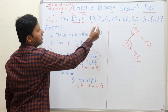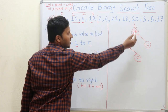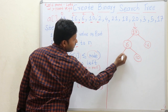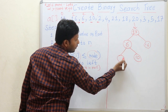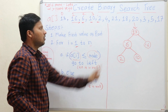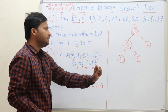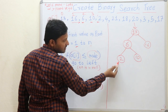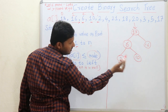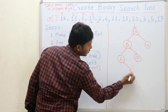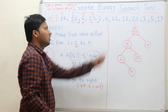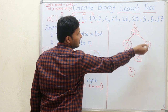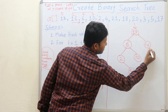For every element you start the comparison from the root. Next element is 2: 2 is less than 13 and less than 6, so it comes to the left of 6. Now 4: 4 is less than 13, less than 6, but greater than 2, so 4 comes here. Now 21: 21 is greater than 13 and greater than 16, so it goes to the right of 16.